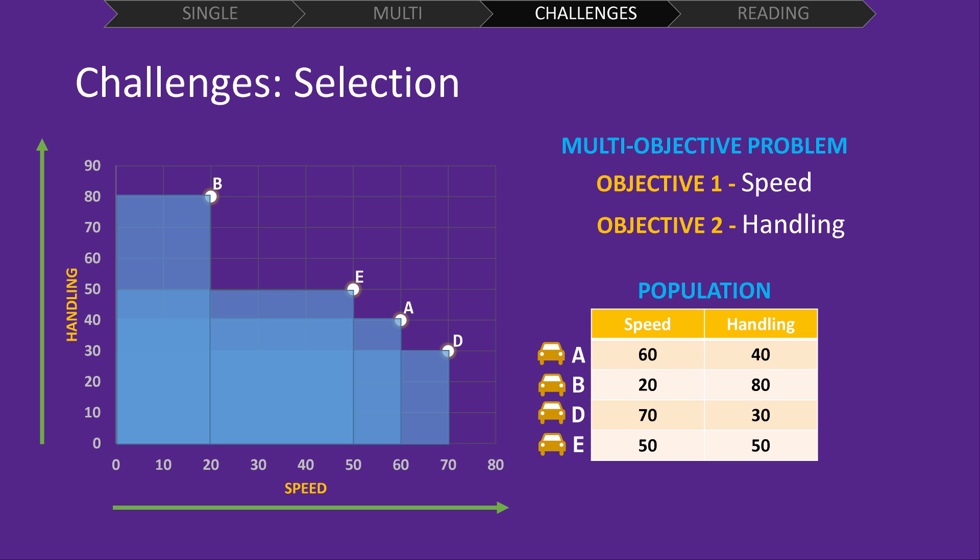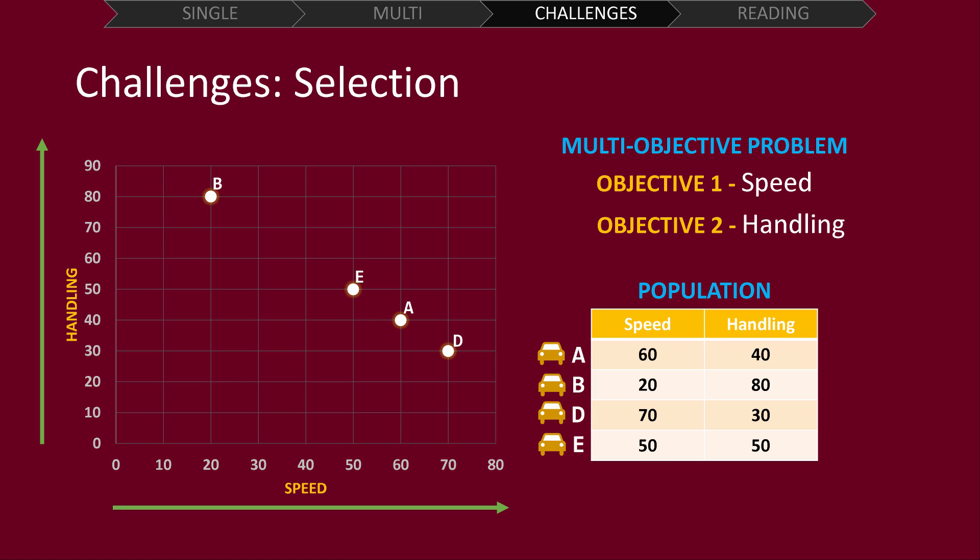Now, if we shade in the area of the objective space which all remaining solutions dominate, we can see that no solutions are inside the shaded area. This means that all remaining solutions are non-dominated. So, which of these solutions is the best? The answer is, we don't know. No solution completely dominates another, so no solution is completely better than another, unless we have some existing information about some decision maker's preferences.